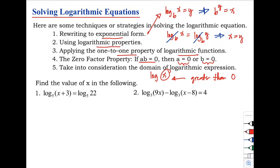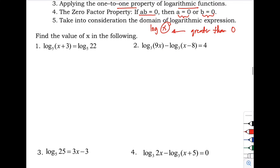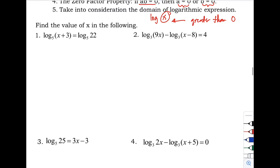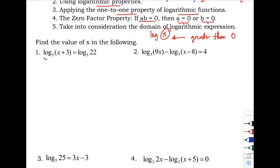Let's start. Find the value of x. Number one: logarithm of (x + 3) with base 5 equals logarithm of 22 with base 5. Notice that the bases are the same, so we can apply the one-to-one property. Removing the logarithms, we can equate x + 3 = 22.